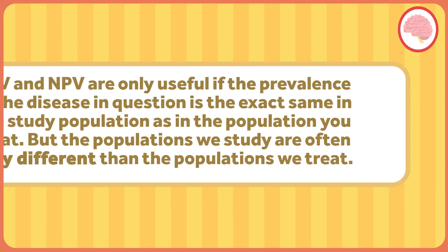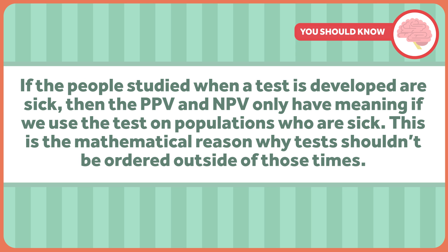Positive predictive value and negative predictive value are heavily dependent on prevalence. They're only useful if the prevalence of the disease in the study population is the exact same as in the population you treat. But the populations we study are often very different than the populations we treat. If the people studied when a test is developed are sick, then PPV and NPV only have meaning if we use the test on similarly sick populations. This is the mathematical reason why tests shouldn't be ordered outside of those circumstances — you should only order a test if you know how it should be interpreted in the population it's meant for.